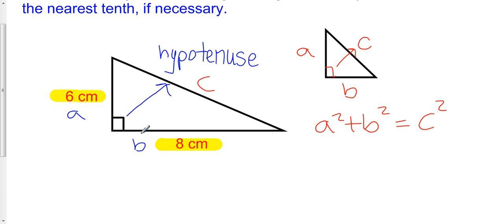We could call 6 centimeters A and 8 centimeters B, or we could have called this B if we wanted to. We could call this B and this A. That doesn't matter. But what does matter is that the hypotenuse is always C, and it's always opposite the right angle.